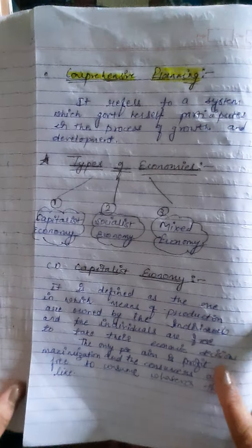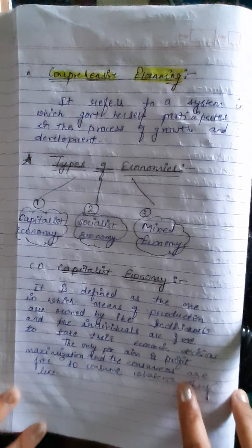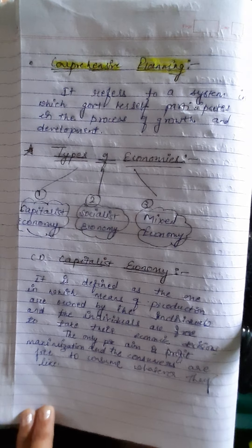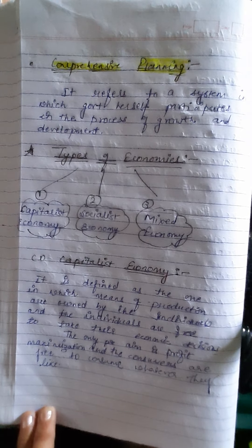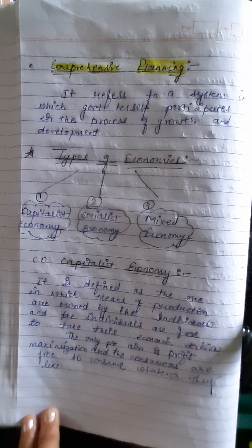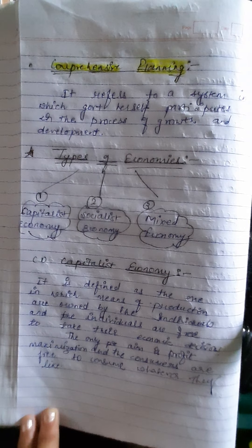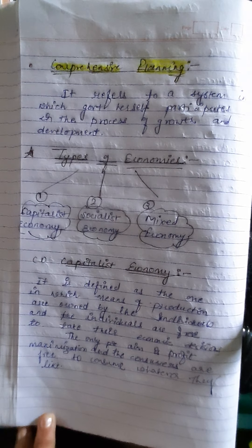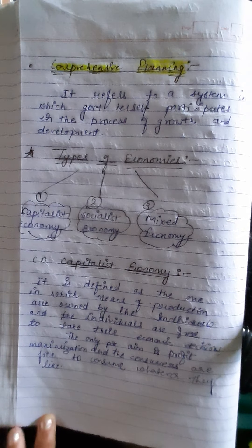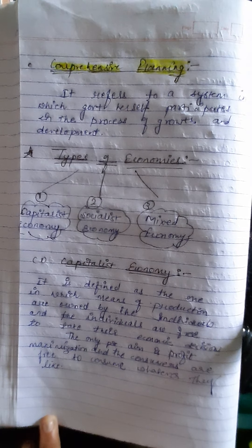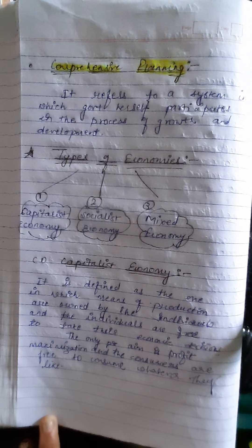Comprehensive planning, on the other hand, refers to a system in which the government herself participates in the process of growth and development. Comprehensive planning is pursued in socialist economies as well as mixed economies. In India, which is a mixed economy, private and public sectors co-exist as agents of growth — individual gains are allowed to be maximized as under capitalism, while social gains are fostered through direct participation of the state as under socialism.